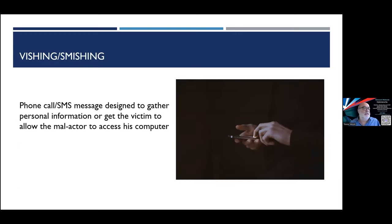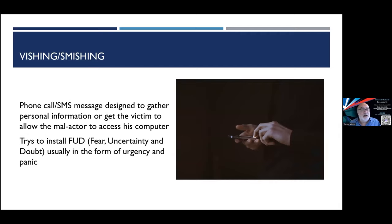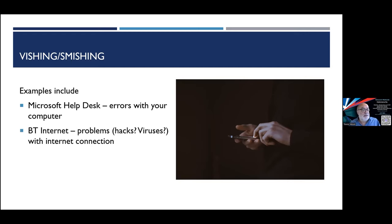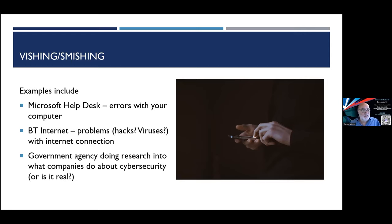Vishing and smishing are phone calls and SMS messages — similar to phishing and designed to instil fear, uncertainty, and doubt, usually through urgency and panic. Examples include the fake Microsoft help desk calling to say there are errors on your computer, BT Internet claiming your connection has been hacked, or someone posing as a government agency doing cyber security research — is it real, or are they trying to extract information from you?